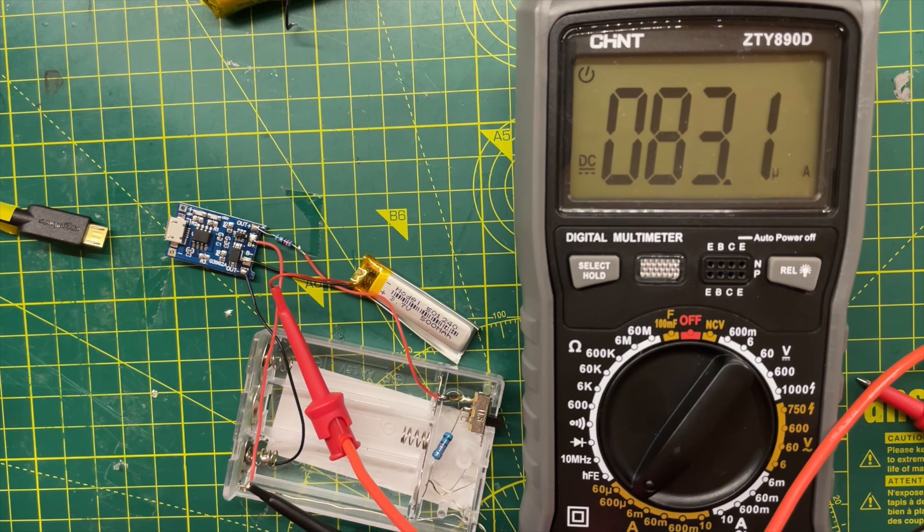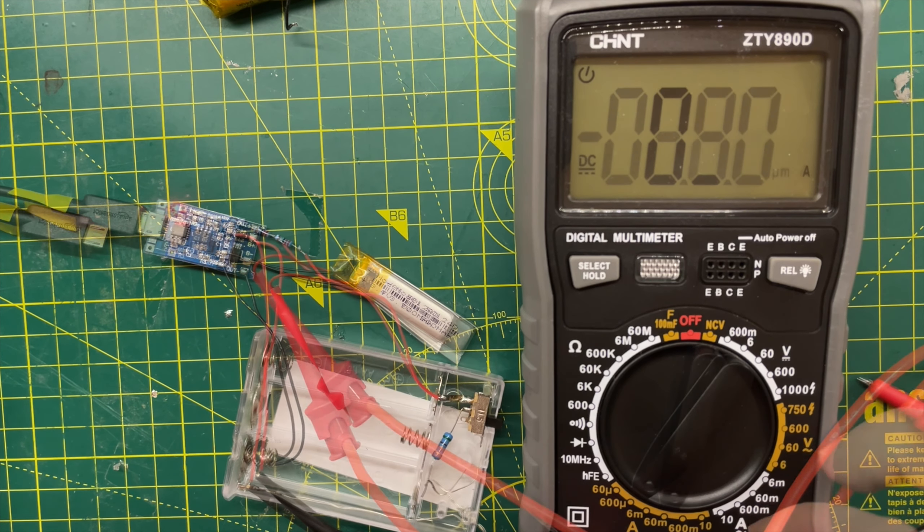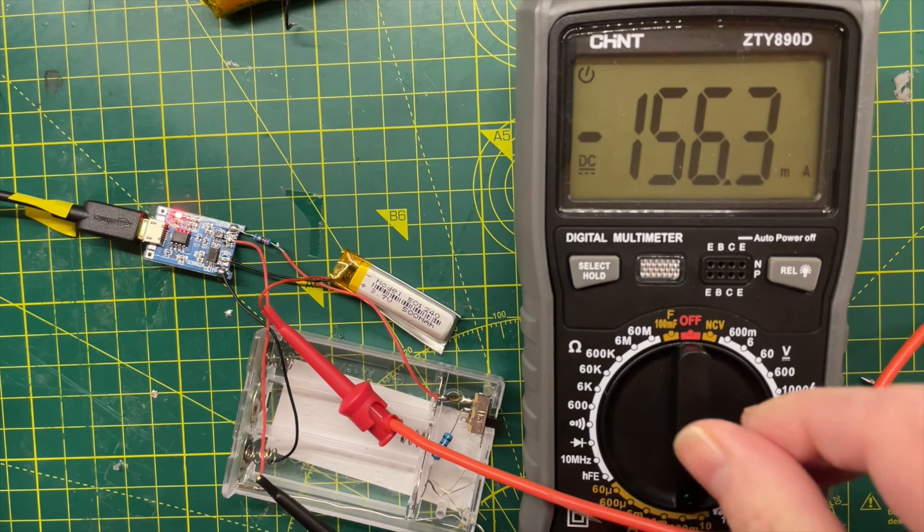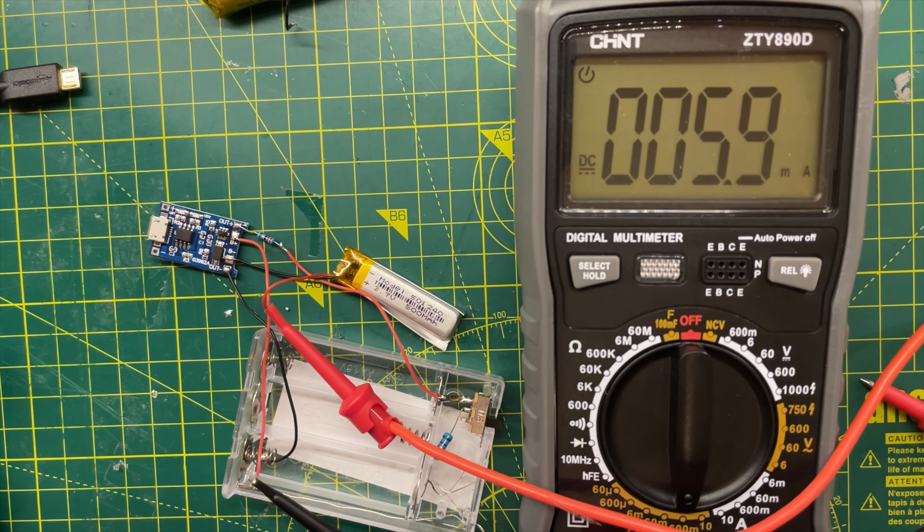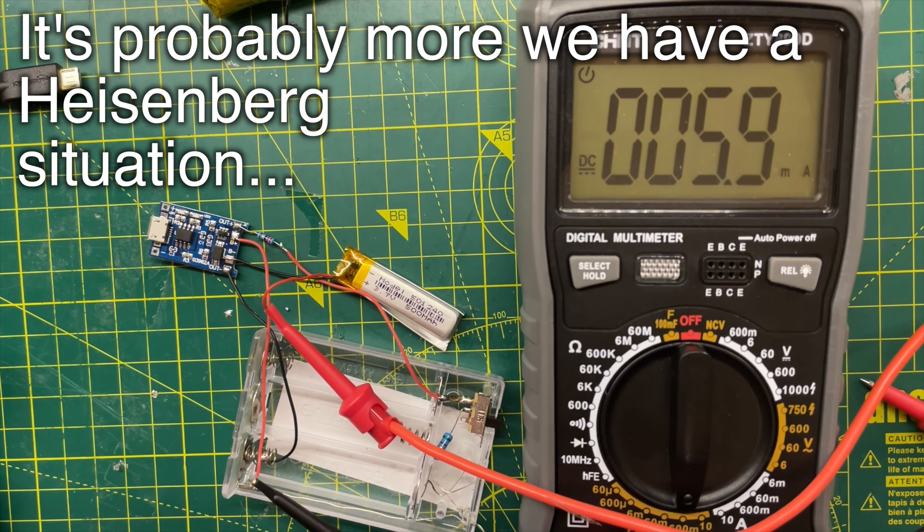This was getting really strange. So I charged up the battery once again. And this time I left the multimeter wired up to see if there might be an occasional fault. When I removed the charging cable, I noticed that there was 6 milliamps flowing out of the battery.